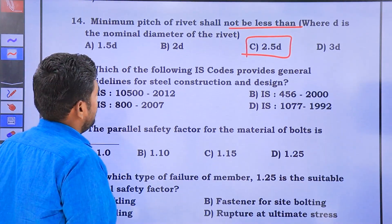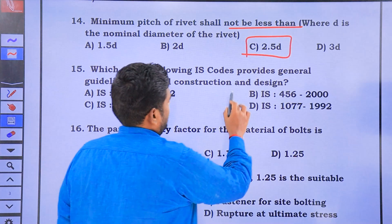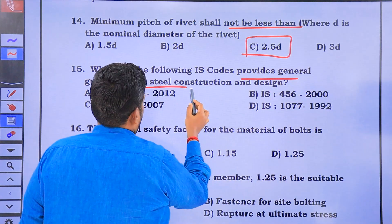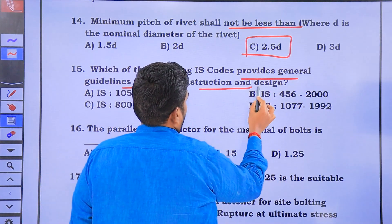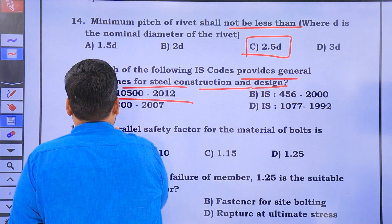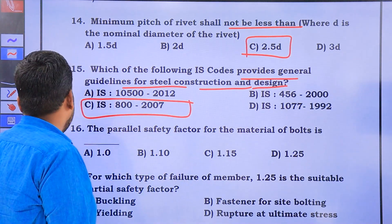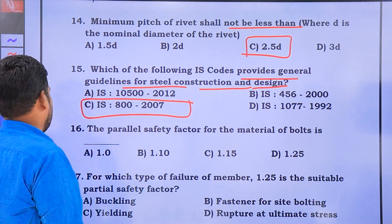Which IS code provision gives general guidance for steel construction and design? The answer is IS 800-2007.